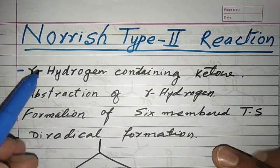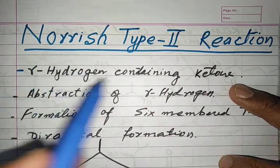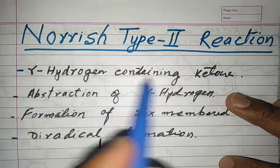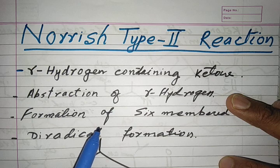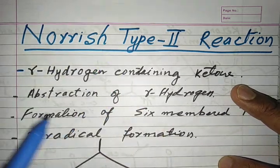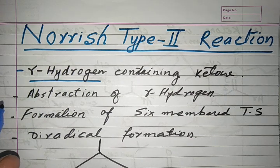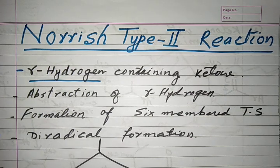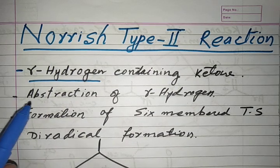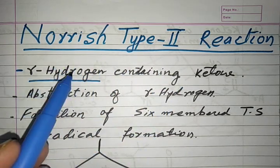Similar conditions apply — the characteristic of the Norrish Type 2 reaction is the presence of a gamma hydrogen. Only those ketones which contain a gamma hydrogen show this reaction. The gamma hydrogen is the hydrogen attached to the gamma carbon.